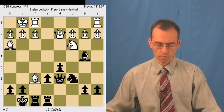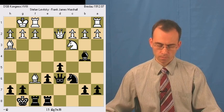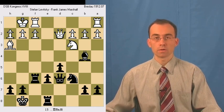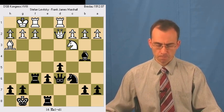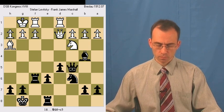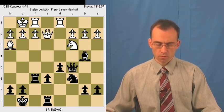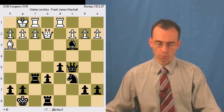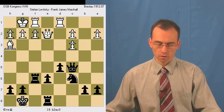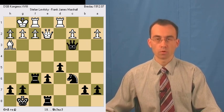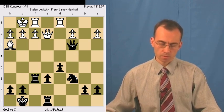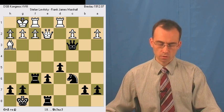So white takes knight. Black retakes with a rook. So here bishop takes knight, pawn takes bishop and queen takes pawn on c3.